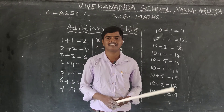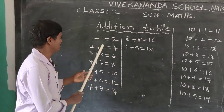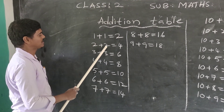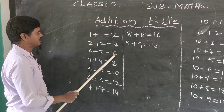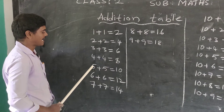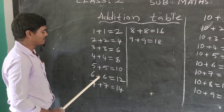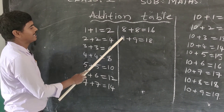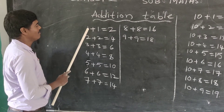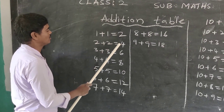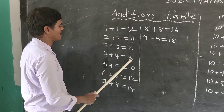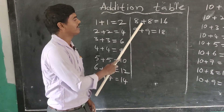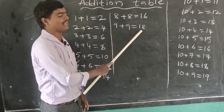Today we read different addition tables. Table one: 1+1=2, 2+2=4, 3+3=6, 4+4=8, 5+5=10, 6+6=12, 7+7=14, 8+8=16, 9+9=18. Read again: 1+1=2, 2+2=4, 3+3=6, 4+4=8, 5+5=10, 6+6=12, 7+7=14, 8+8=16, 9+9=18.